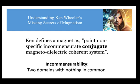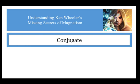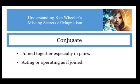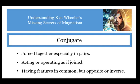Today, we're going to talk about the conjugate relationship that exists between various domains of incommensurability. Ken describes the magnet as an incommensurate yet conjugate system. So what does this mean? First, let's have a look at the definition of the word conjugate: joined together, especially in pairs; acting or operating as if joined; having features in common, but opposite or inverse. Although space and counterspace are incommensurate in principle, in the magnet they are acting and operating as if they are joined. Space cannot exist without counterspace, and counterspace cannot be intuited without space — both must exist for either to exist.